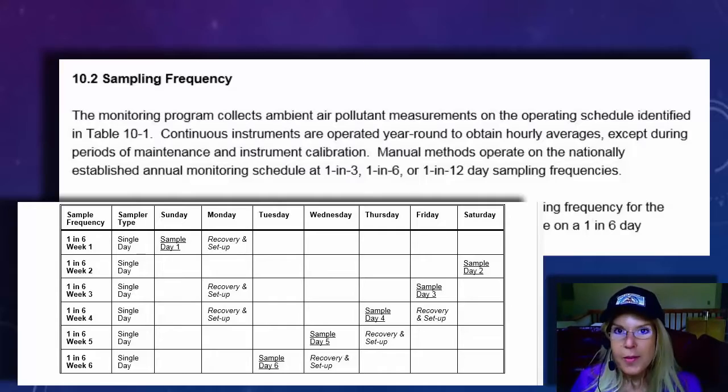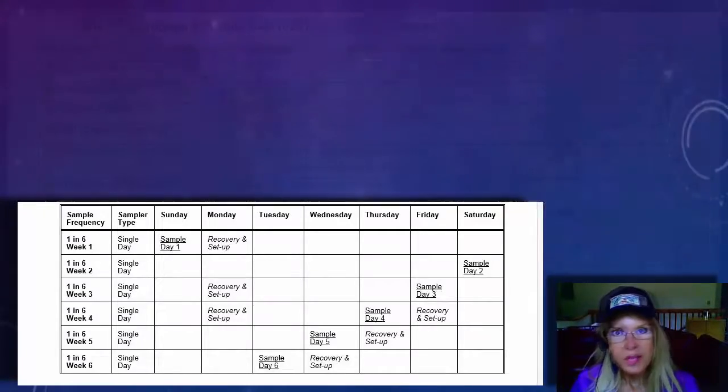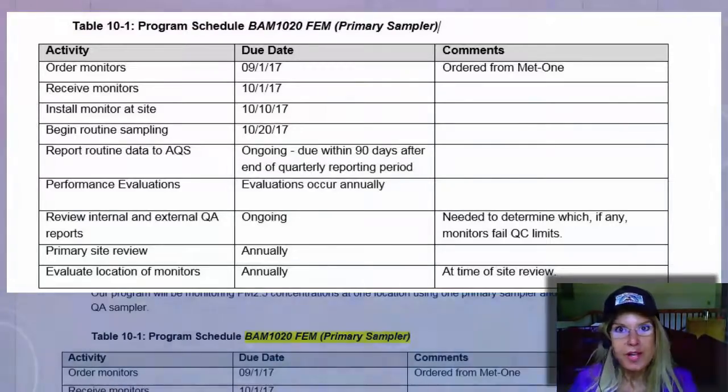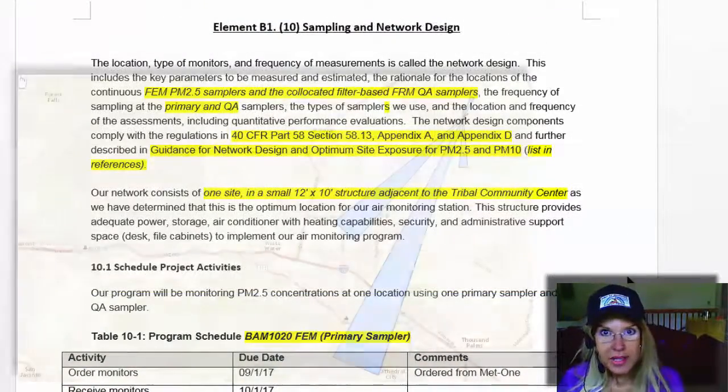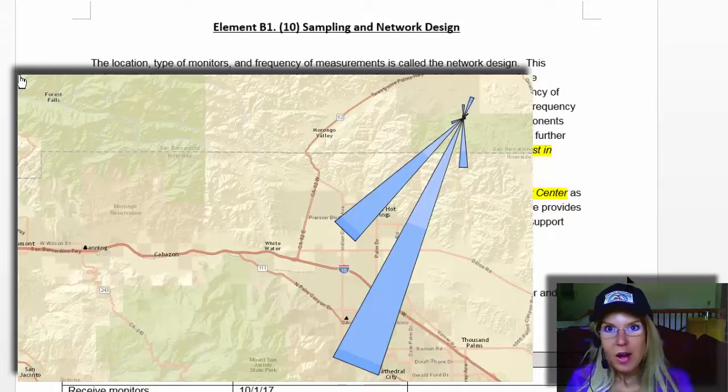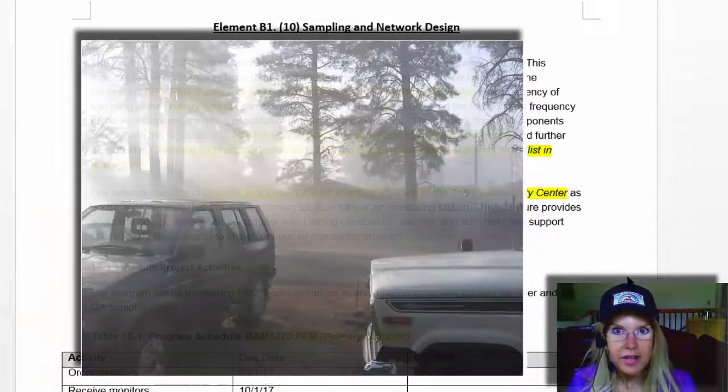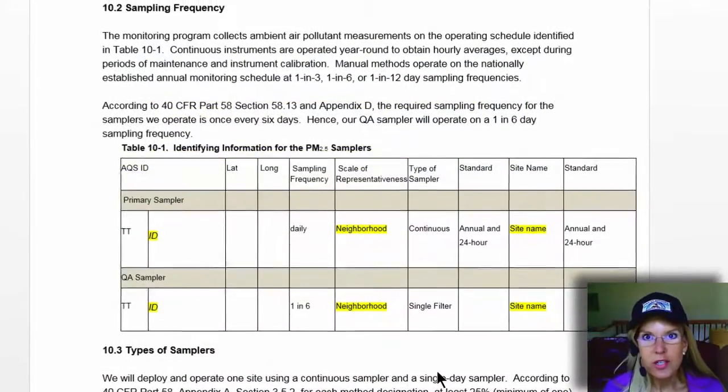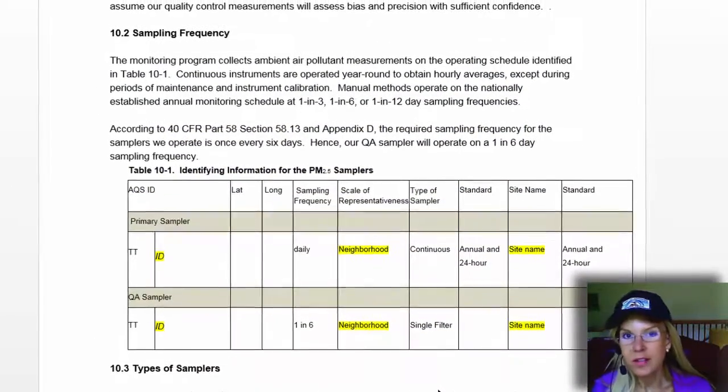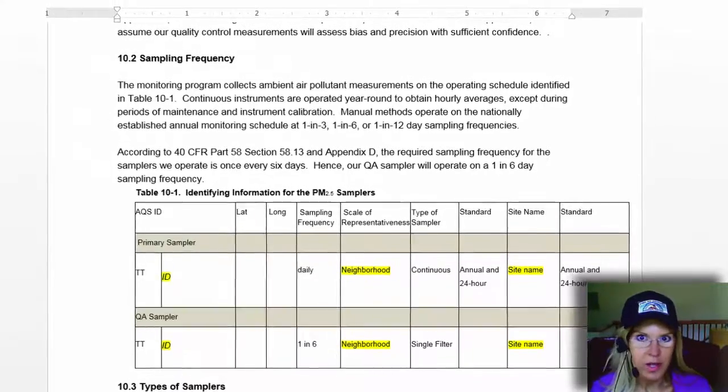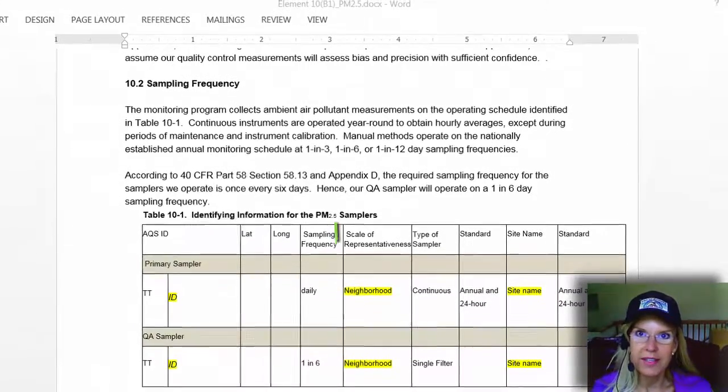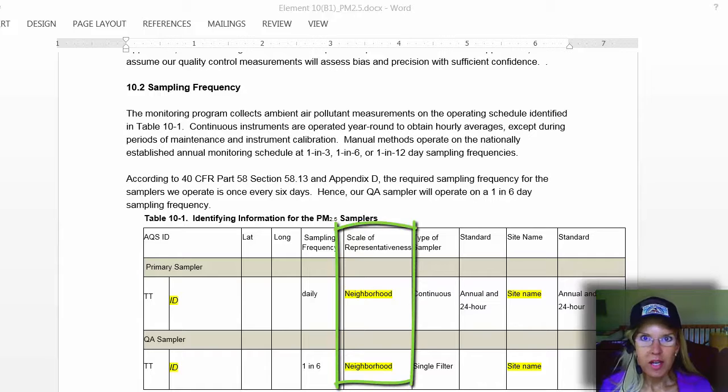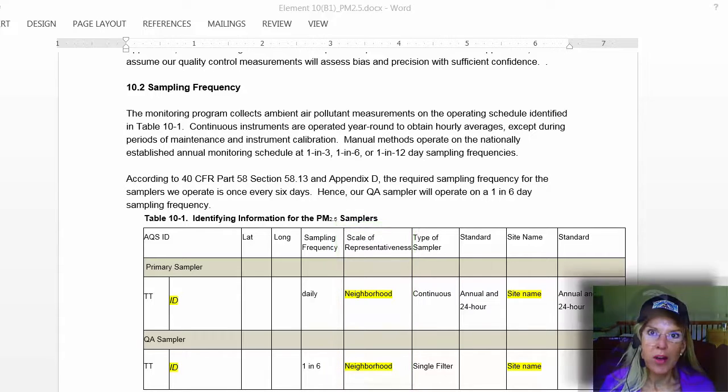You also need to put in something of a schedule for your overall project. So this section is very important because if you're measuring in the wrong place or in the wrong way, it doesn't matter how low your precision error is because your measurements aren't representative of the air that people are breathing. One of the terms that you're going to use in this section, if you're writing this QAPP for ambient air quality monitoring, is scale of representativeness. And what that means is how big of an area does the measurement system that you're using at one particular location, how big of an area that's representative of.